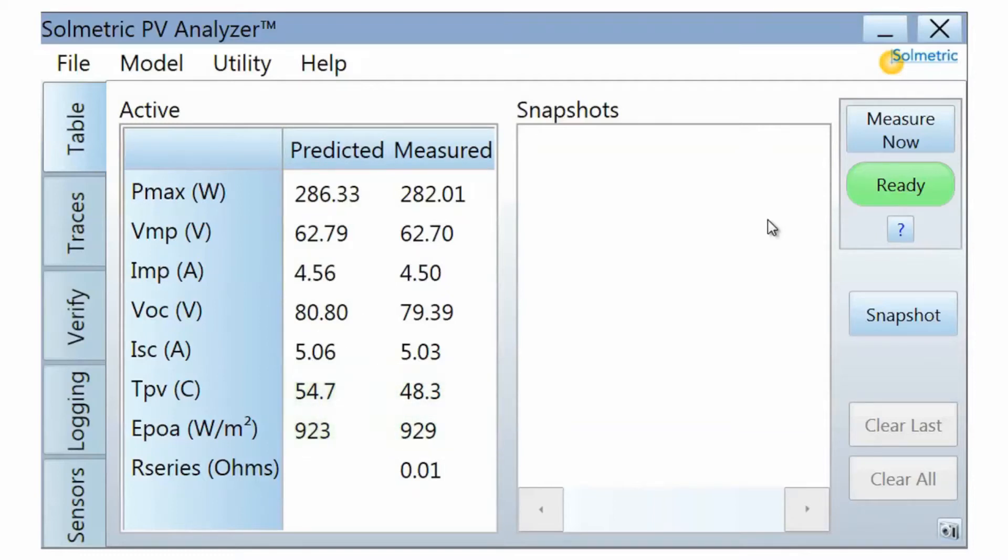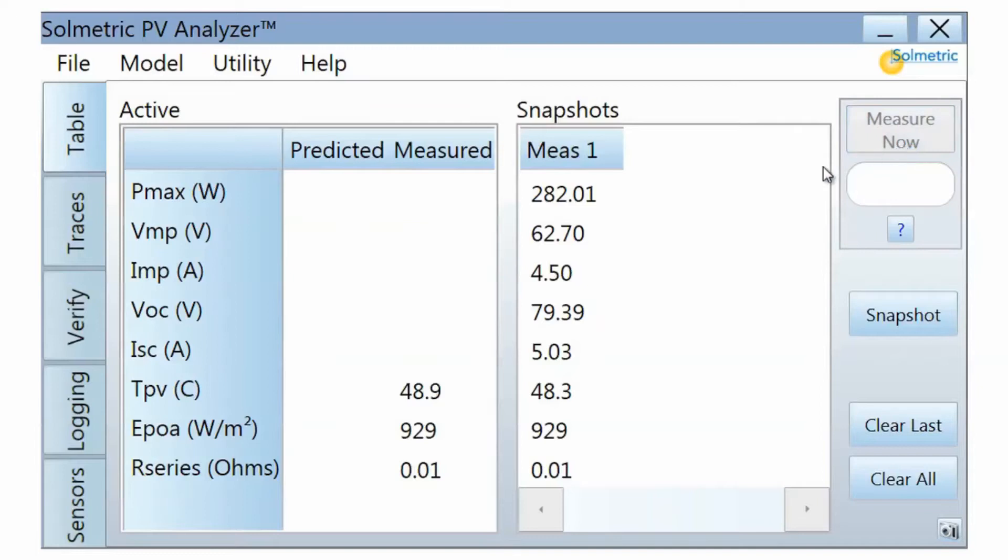You can temporarily save measurement results by pressing the Snapshot button. This feature is useful when you are comparing a sequence of measurements to one another.